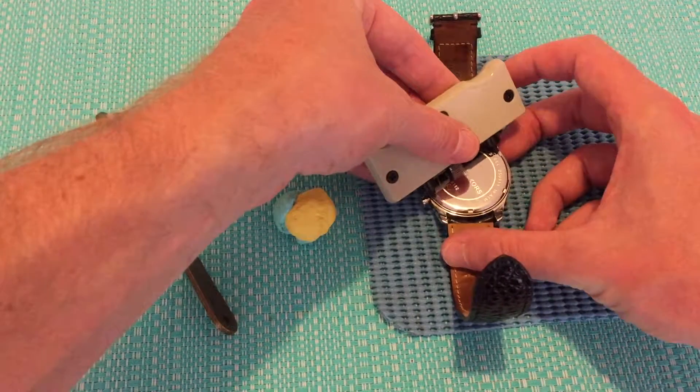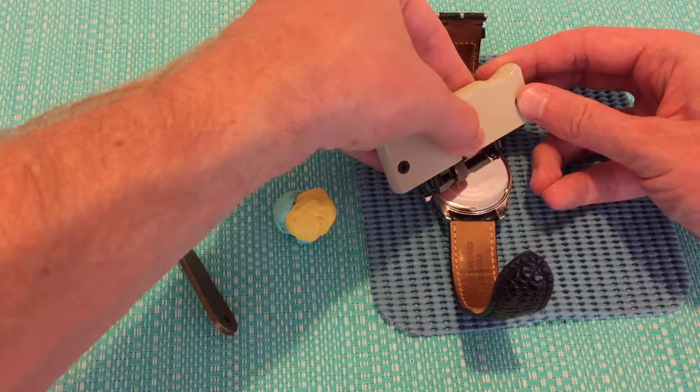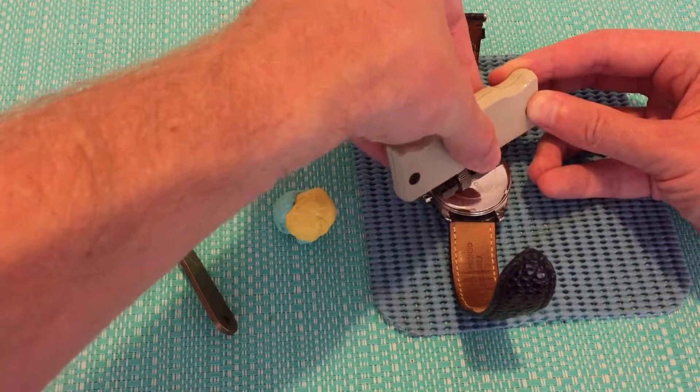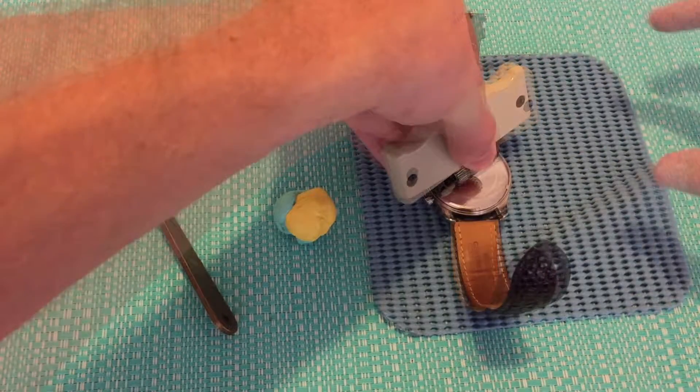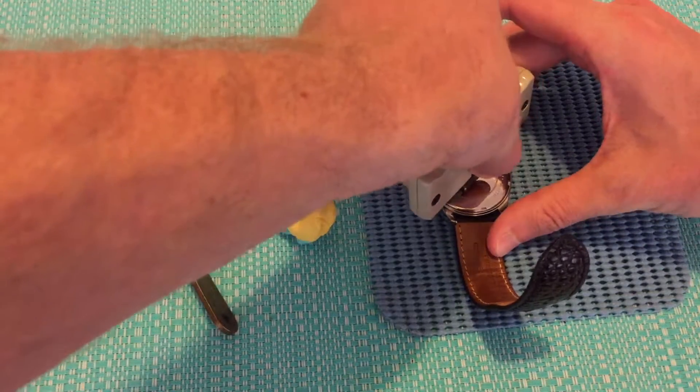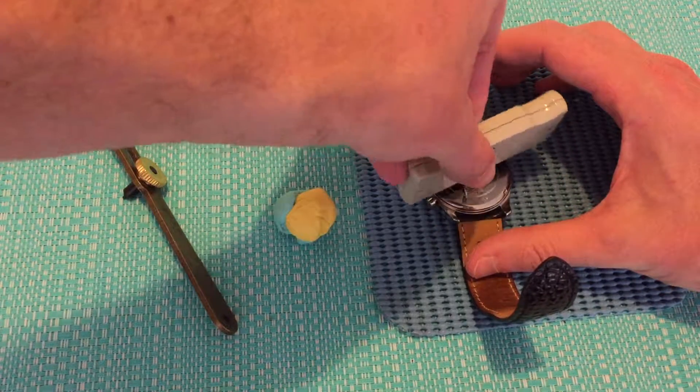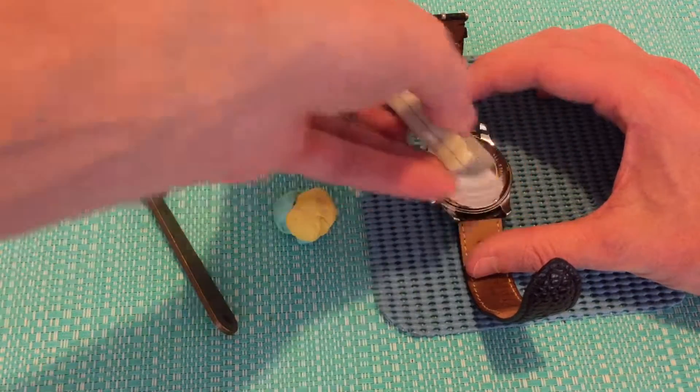What you're going to do is line the tool up with the little notches on the back of the case. Then with those notches lined up, twist it in an anti-clockwise direction and the case will come loose.